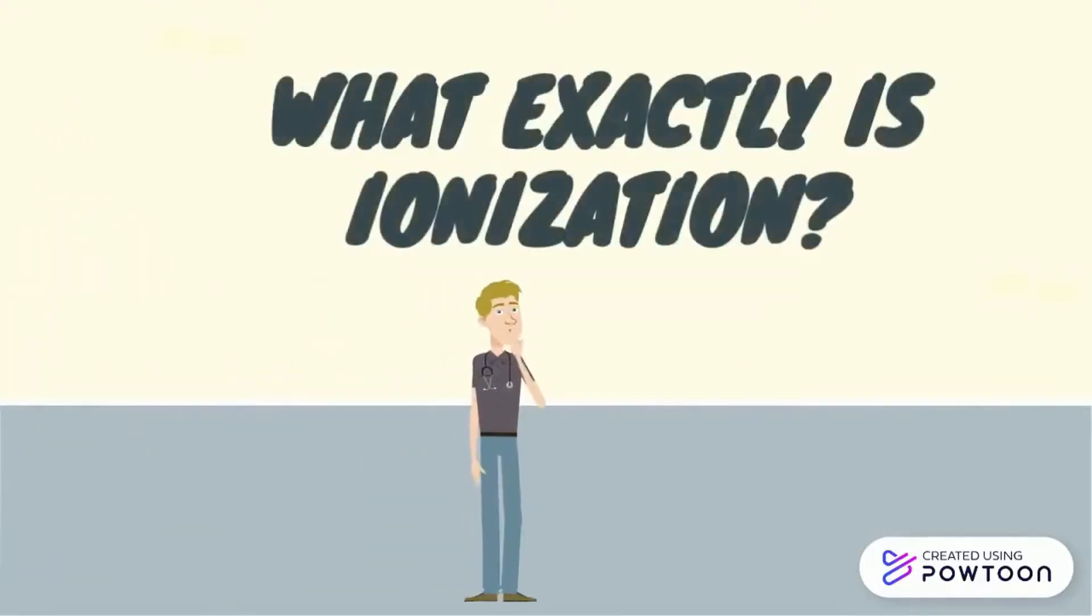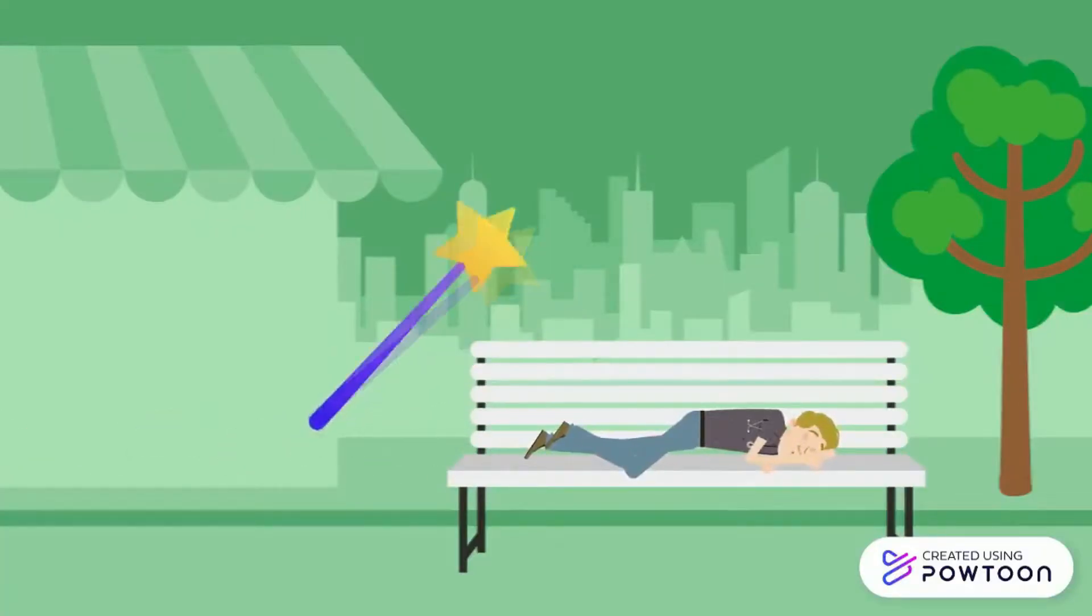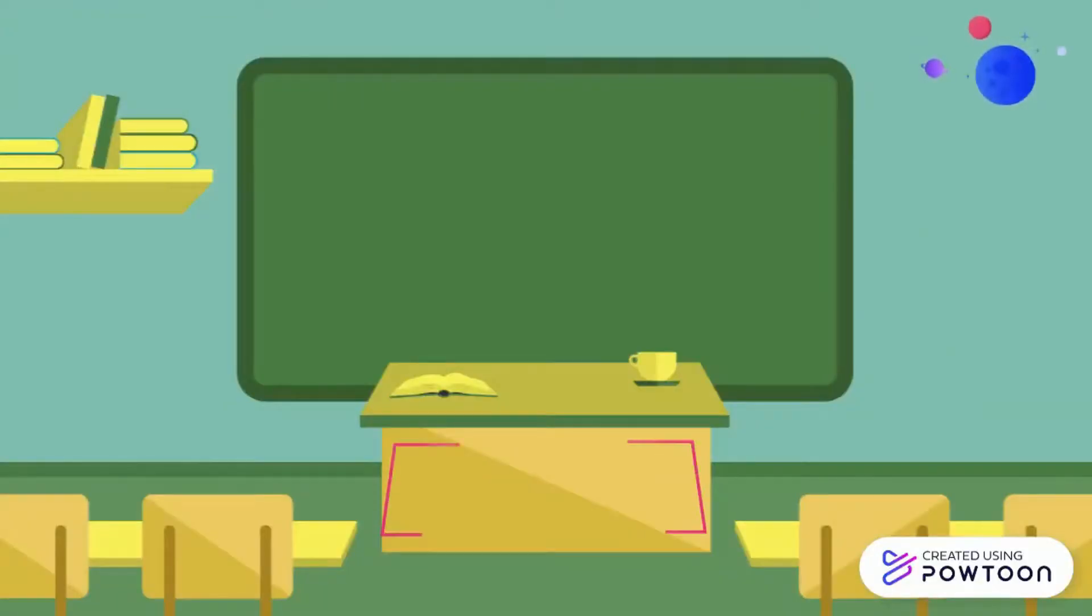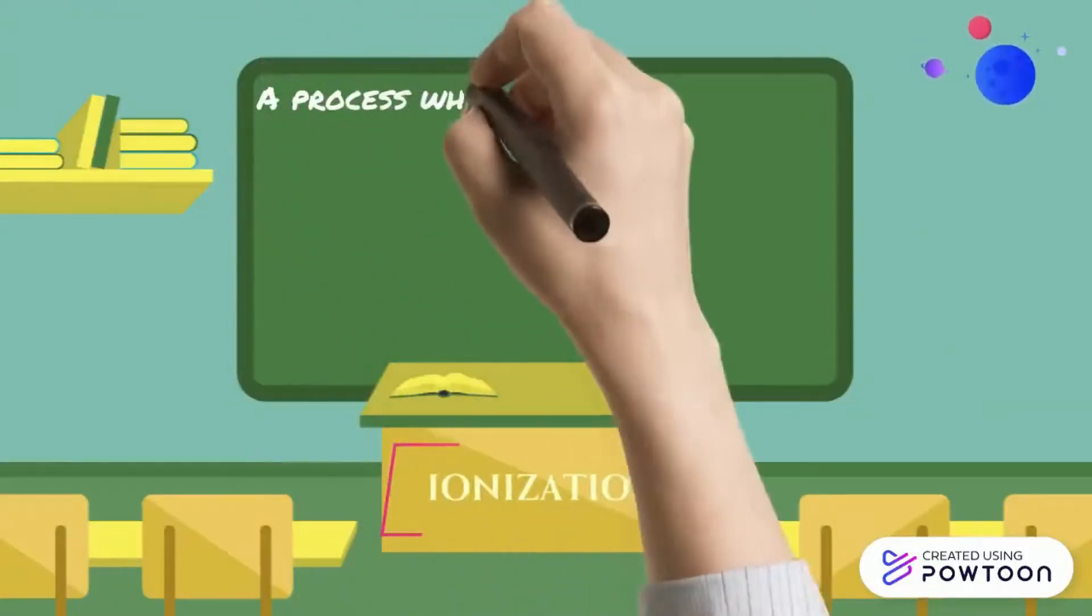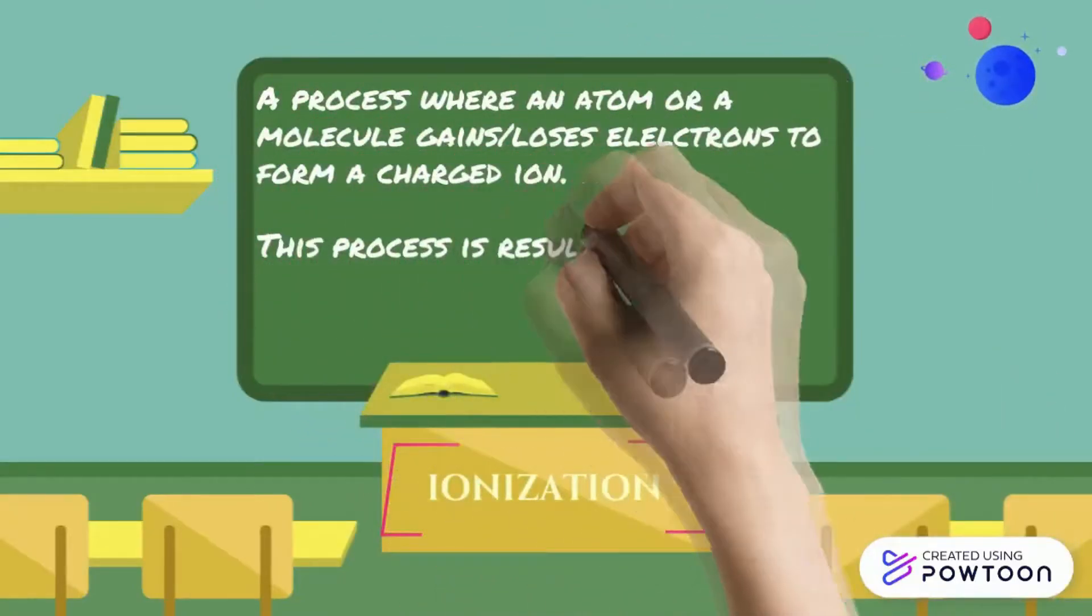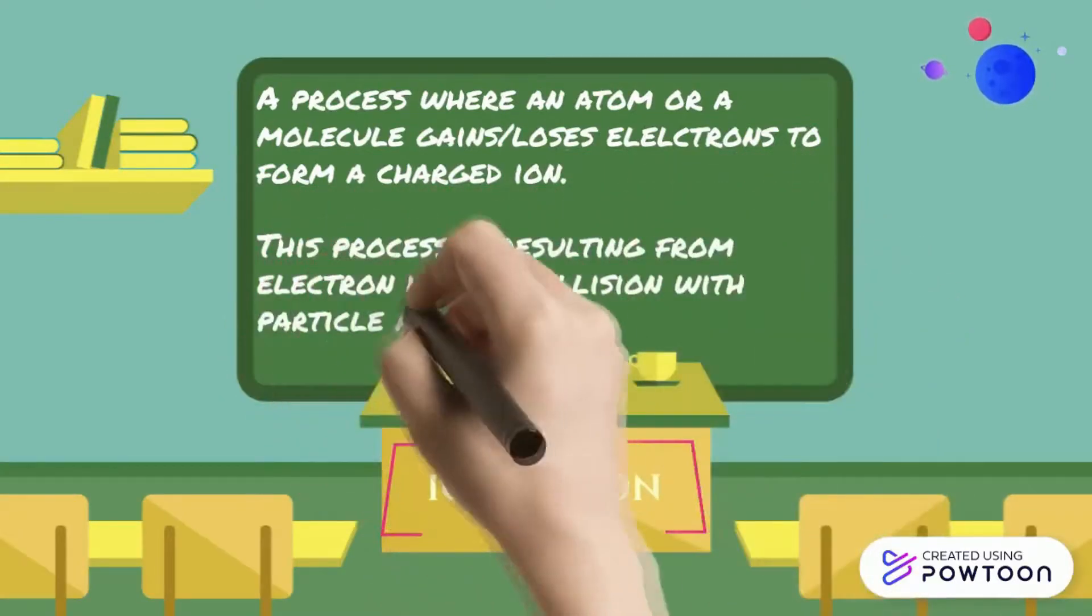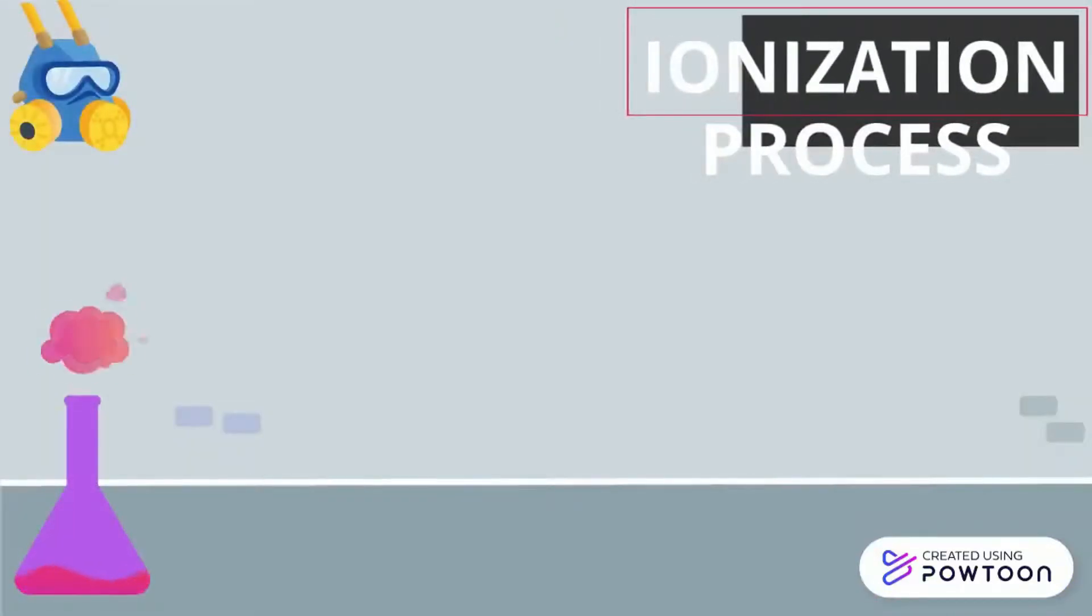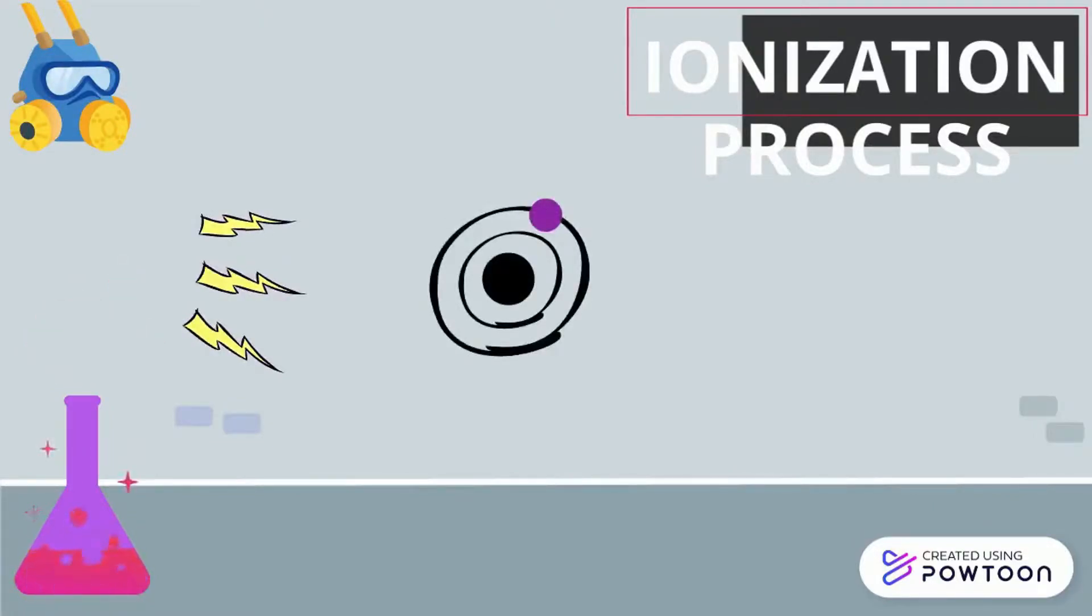Let's get started. For the ionizing process, the radiation will strike the electron of the atom and it will produce the electron, which is free electron and positive ion.